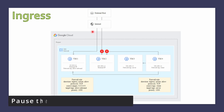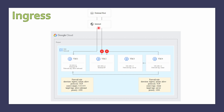Now, can VM1 receive traffic from the internet? Yes — because the firewall rule has source range 0.0.0.0/0 and, most importantly, VM1 has an external IP. Since it has an ingress rule allowing traffic, if somebody from the internet accesses a web server on this VM, the response will also go back to that internet client because firewall rules are stateful.